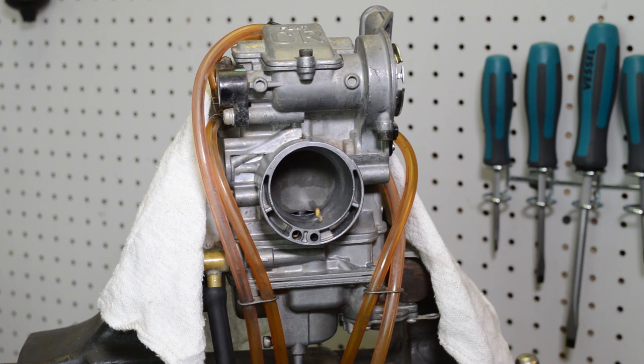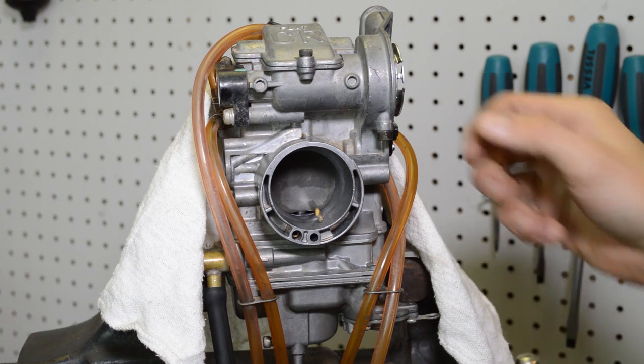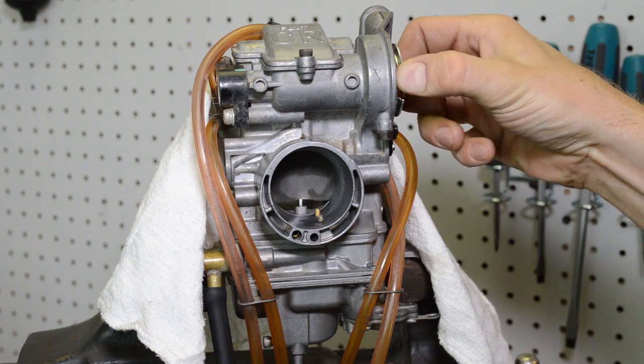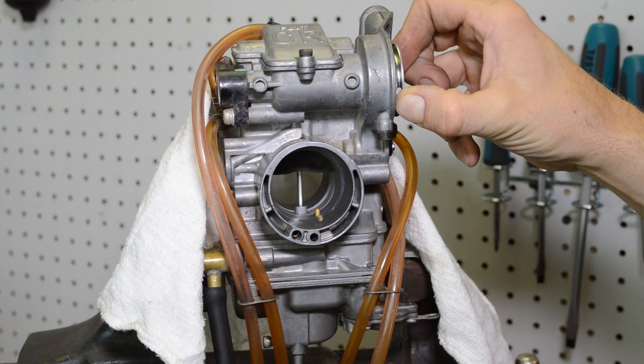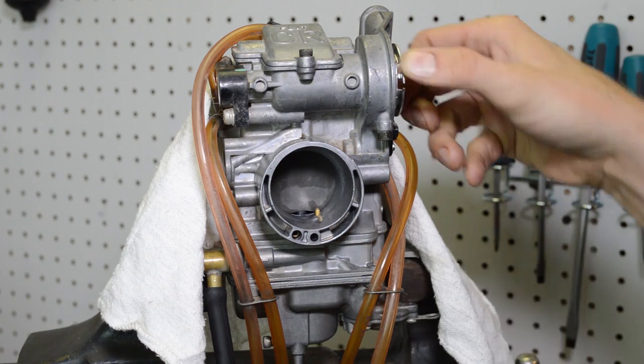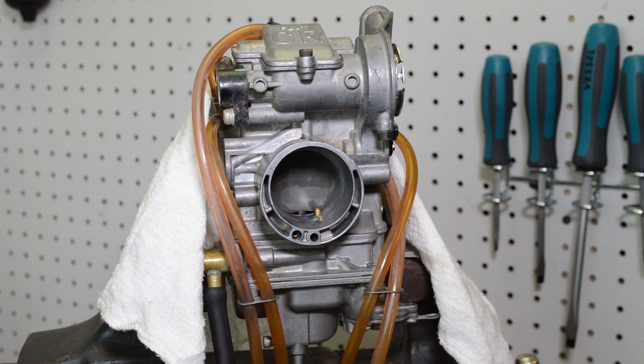Well, basically, these high-performance engines have large carburetors. You whack the throttle open, right? You get this rush of air. It causes a lean condition. And to compensate for that, you have an accelerator pump which covers up that lean bog. And basically, that's how that works.